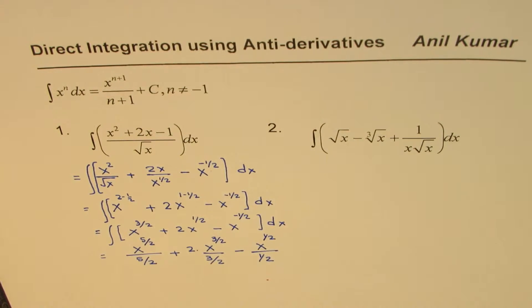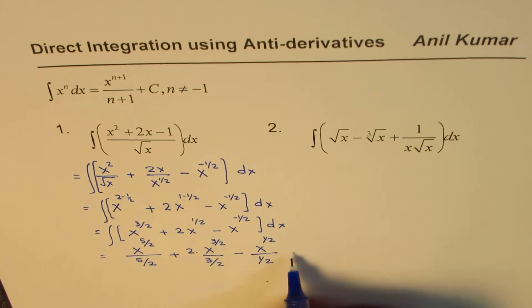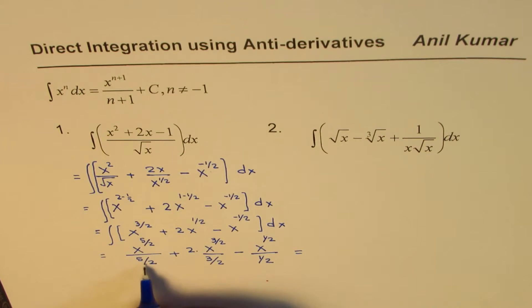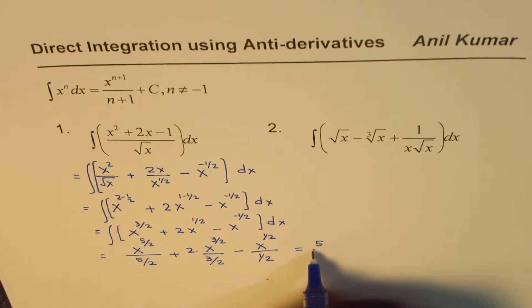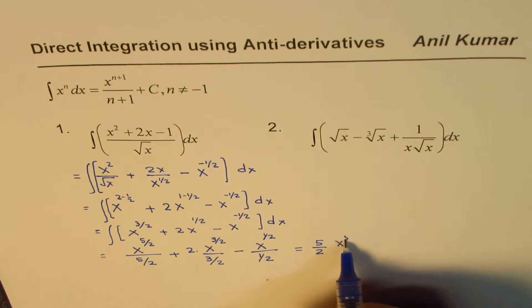So that is the result which you can simplify and then write down the final answer. So we could write this as, let me continue on this side. So 5 over 2, so you have x to the power of 5 over 2, plus when you multiply this,